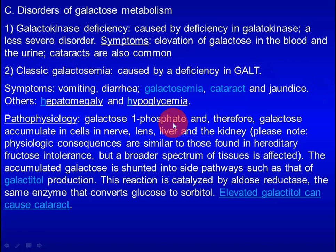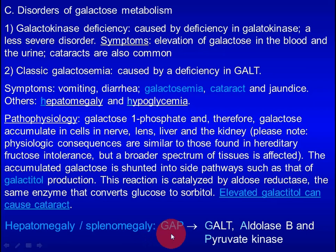GALT deficiency causes classic galactosemia, with more severe clinical outcomes. Besides buildup of galactose and galactitol, phosphate is also trapped in galactose-1-phosphate. In the absence of phosphate, cells cannot synthesize ATP, AMP levels rise, and without ATP the liver cannot synthesize glucose or proteins, leading to hypoglycemia and hepatomegaly. Elevated galactitol causes cataracts. Three diseases related to monosaccharide metabolism that cause hepatomegaly or splenomegaly are summarized by the mnemonic GAP: GALT, aldolase B, and pyruvate kinase deficiencies.